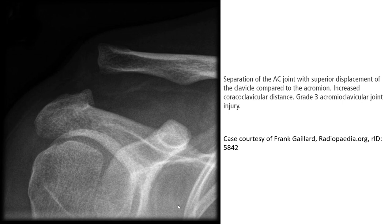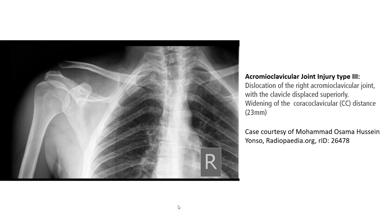Separation of the AC joint with superior displacement of the clavicle compared to the acromion and increased coracoclavicular distance — you can see acromioclavicular joint injury. Dislocation of the right acromioclavicular joint with the clavicle displaced superiorly, widening of the AC joint, and coracoclavicular ligament involvement.